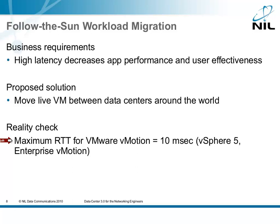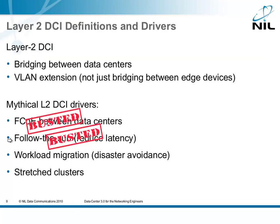The problem is that the maximum round-trip time supported by VMware for vMotion was 5 milliseconds; now it's 10 milliseconds, but you need vSphere 5 and the Enterprise Edition of vSphere. Still, 10 milliseconds can get you across the country, it can hardly get you to Ireland, and it will never get you across the Atlantic or Pacific. So follow-the-sun workload migration is a plain stupid idea. Myth number two, busted.